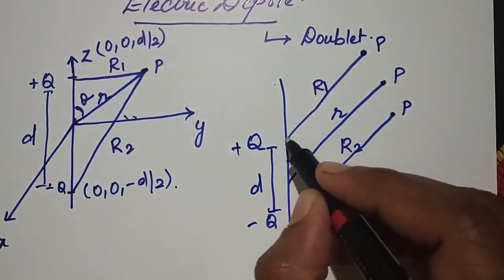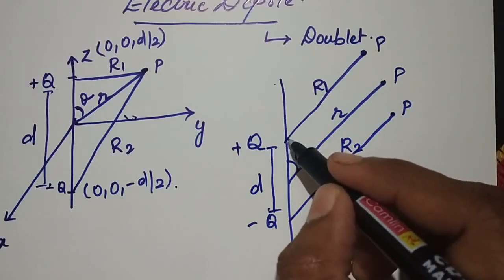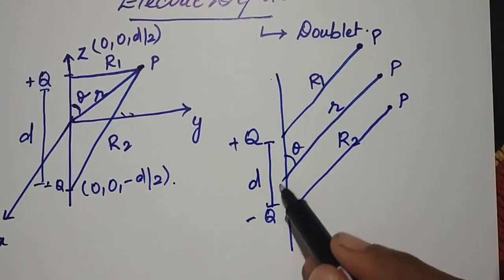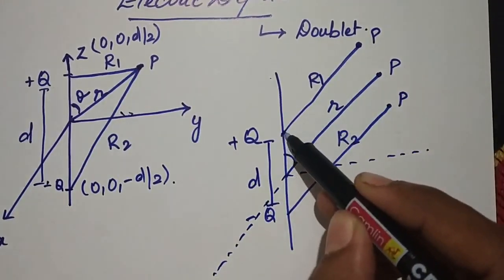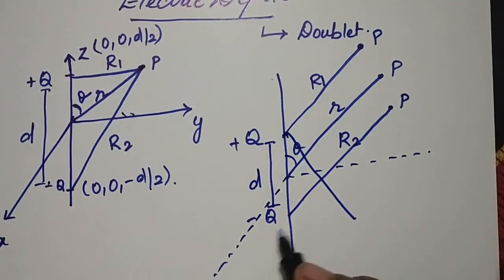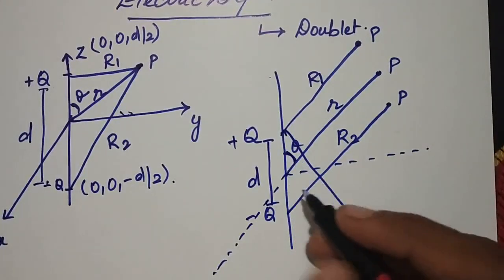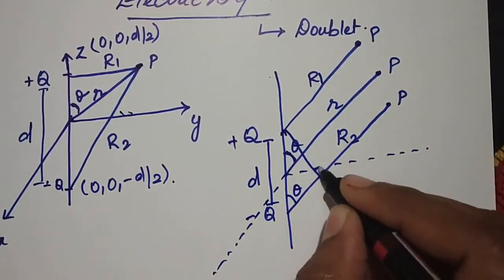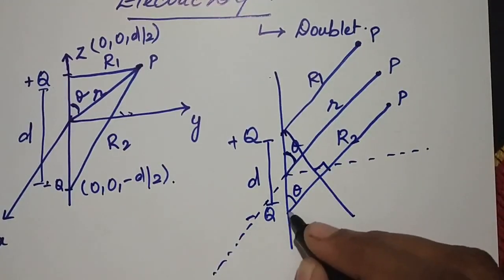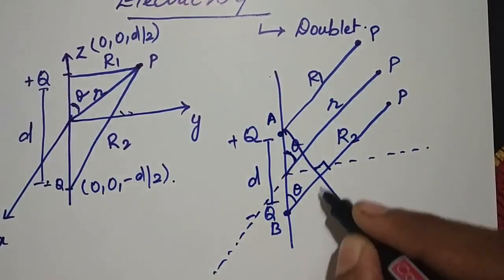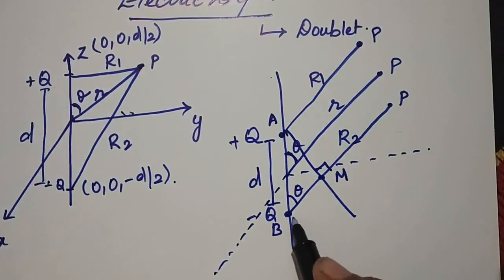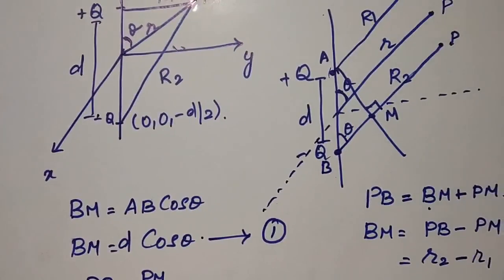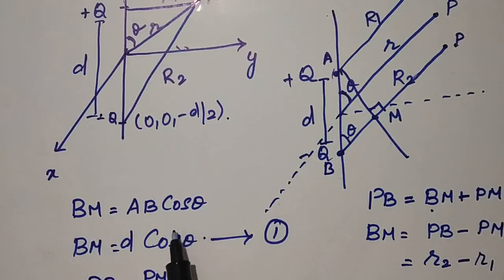For simplification, whatever the point is in the z-plane we extend it to the x-plane — this is the y-plane. We are going to extend this point to the xy-plane. So theta will also be present here, and this will be my angle. Now consider these two points to be A and B, and let this point be M.